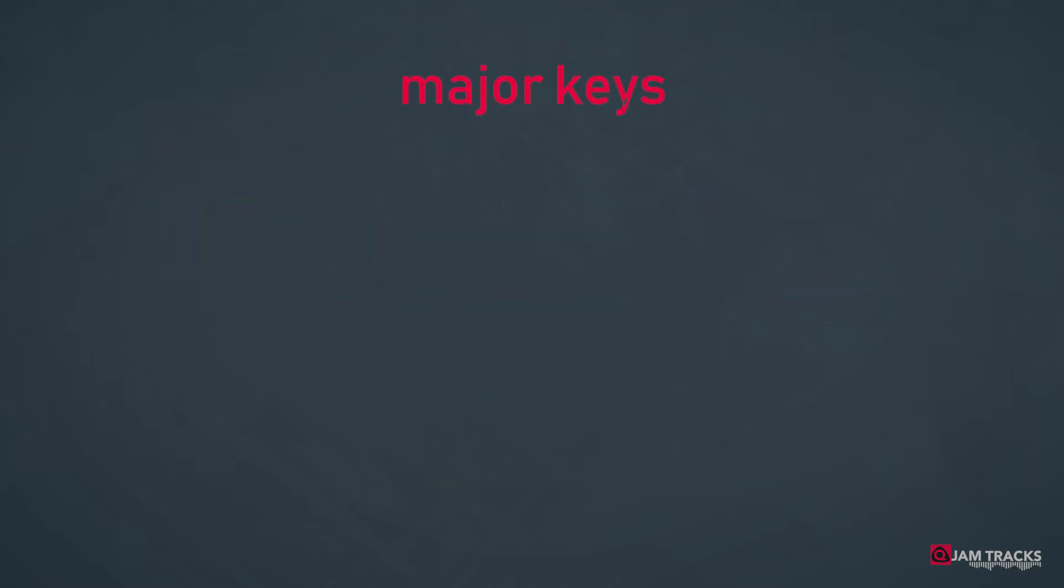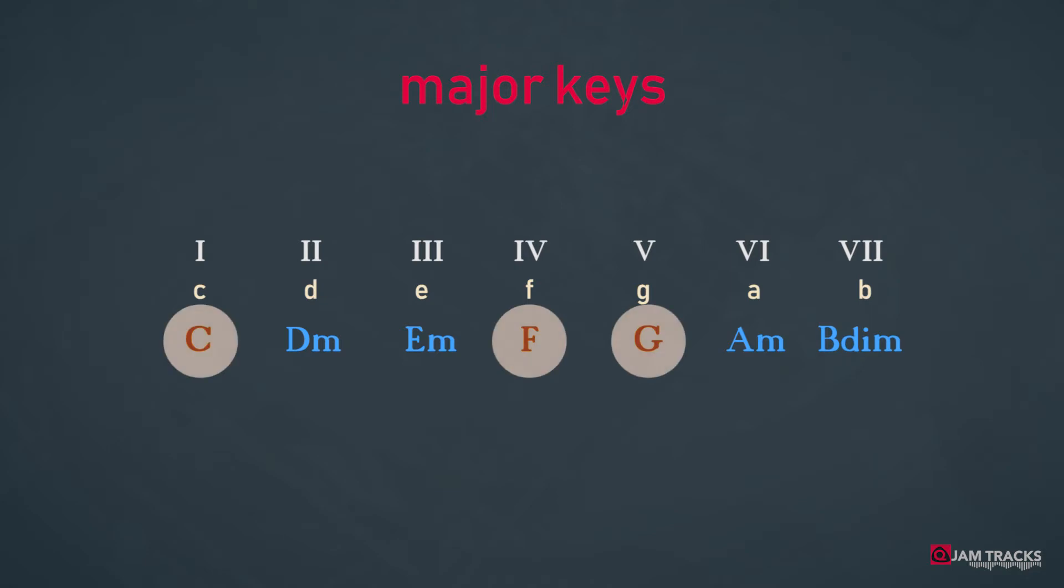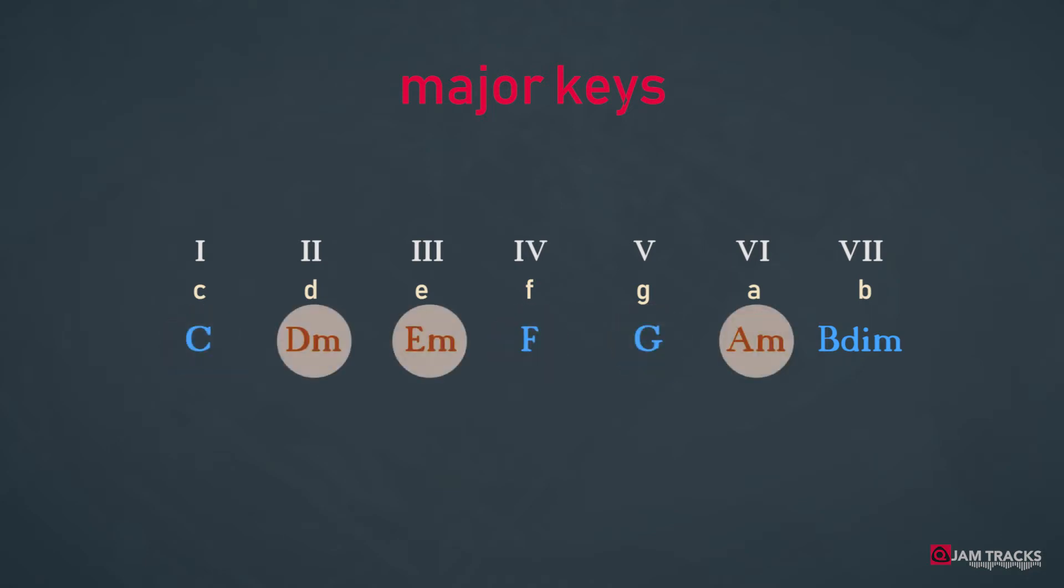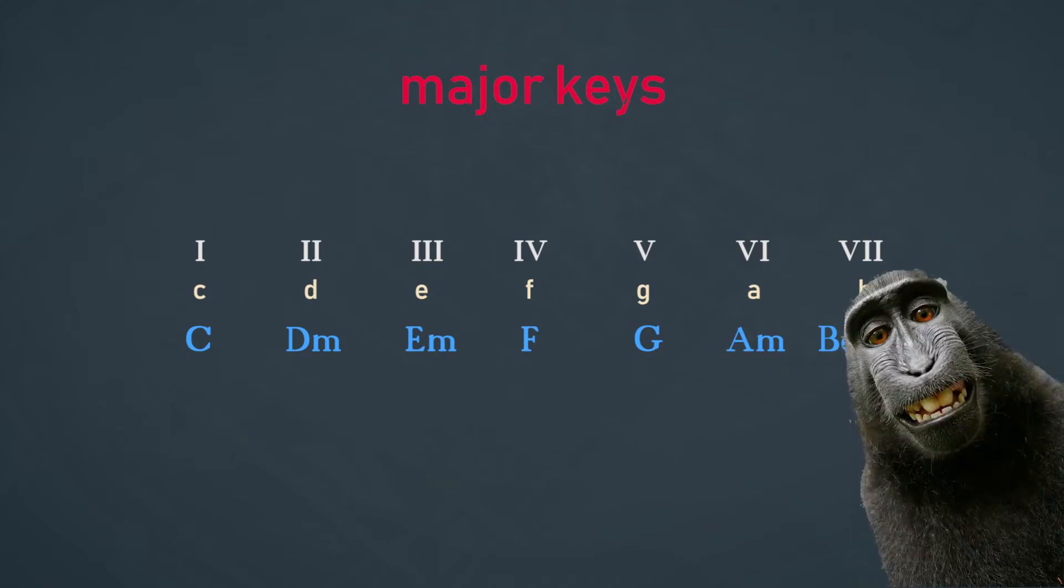Let's start with the major keys. The seven notes of any major key are the roots of the chords found in that particular key. Some chords in that major key will turn up as major chords and some will turn up as minor chords. And just one little note turns out to be the root of a diminished chord. This chord is not weird but different like his mother always says.